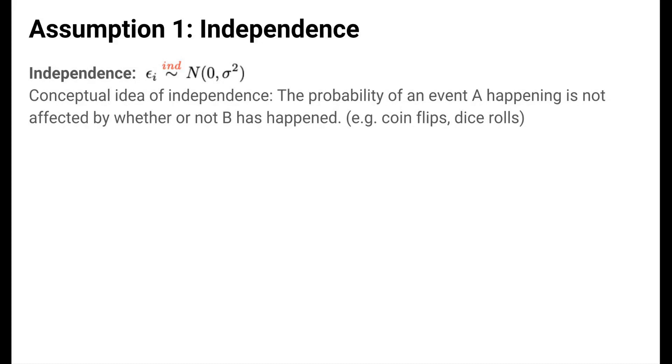The first part of the assumption is that the residuals, the errors in linear regression, are statistically independent. A formal mathematical definition of statistical independence is best saved for our upper level probability class. But you can think of independence conceptually as saying that the probability of one event A happening does not depend on whether or not some other event B happened. For example, we could say that flips of a coin are independent.